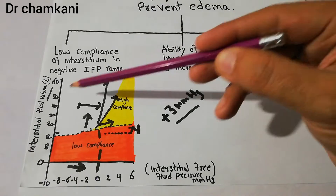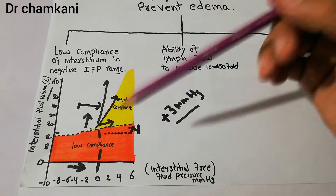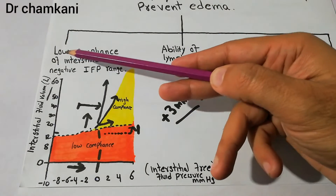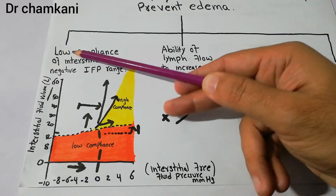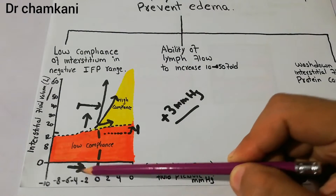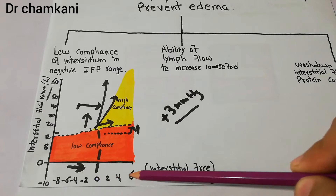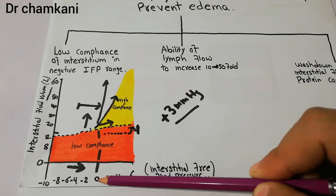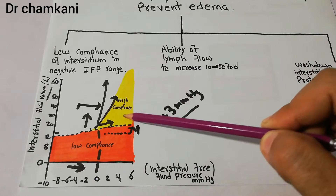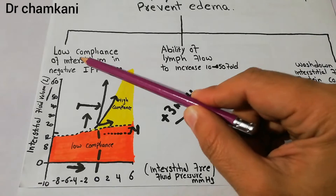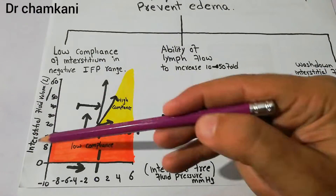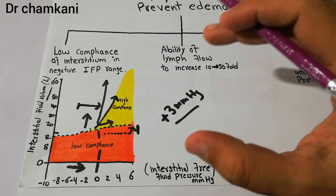With the help of this graph, we discussed that the interstitium is not very compliant — its compliance is very low — when the interstitial fluid pressure is in the negative zone. But as soon as it enters the positive zone, the compliance increases and the interstitium becomes very much compliant, allowing a lot of fluid collection to occur.